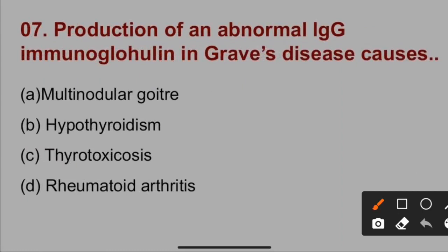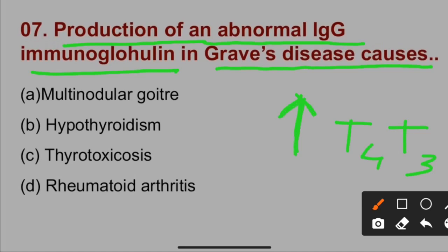Question number seven: Production of abnormal IgG immunoglobulin in Graves' disease causes — the IgG antibodies bind to the TSH receptor on the thyroid gland and enhance the secretion and formation of thyroid hormones T4 and T3. The increased levels of T3 and T4 in the blood result in thyrotoxicosis. So the correct option for question number seven is option C.